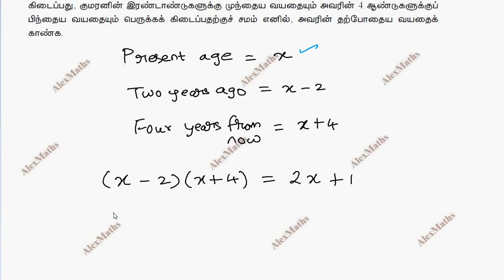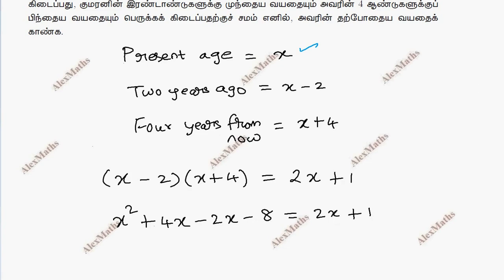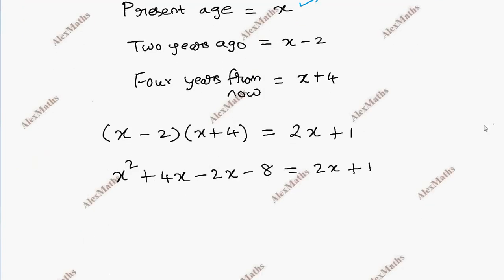If you multiply it out: x squared plus 4x minus 2x minus 8 equals 2x plus 1. Now simplify by combining like terms.